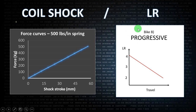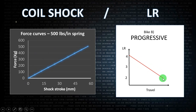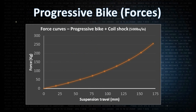Now we will analyze Bike B, the progressive bike. Remember that both bikes have the same travel and the same shock stroke — the only difference is the variation of leverage ratio along the travel. In the progressive bike, we divide the coil shock graph by the leverage ratio: initial values divided by four, and final values divided by two. This gives us a progressive curve.